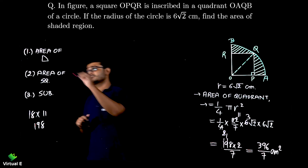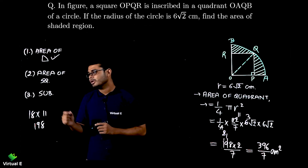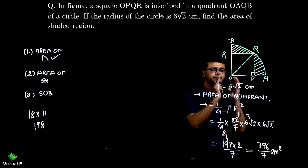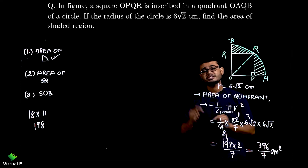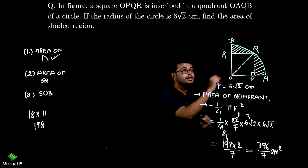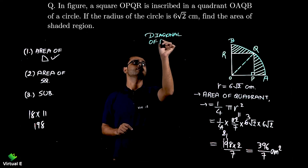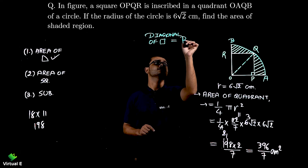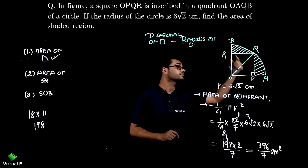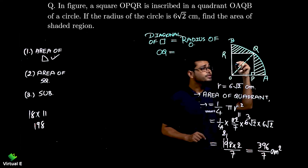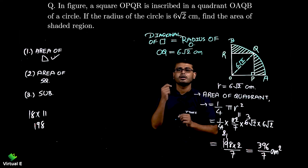Now for Step 2, the area of the square. The formula is side × side, but we don't have the side directly. Looking at the figure, OQ is the diagonal of the square, and OQ is also the radius of the circle. So the diagonal of the square equals the radius of the circle, which is 6√2 cm.